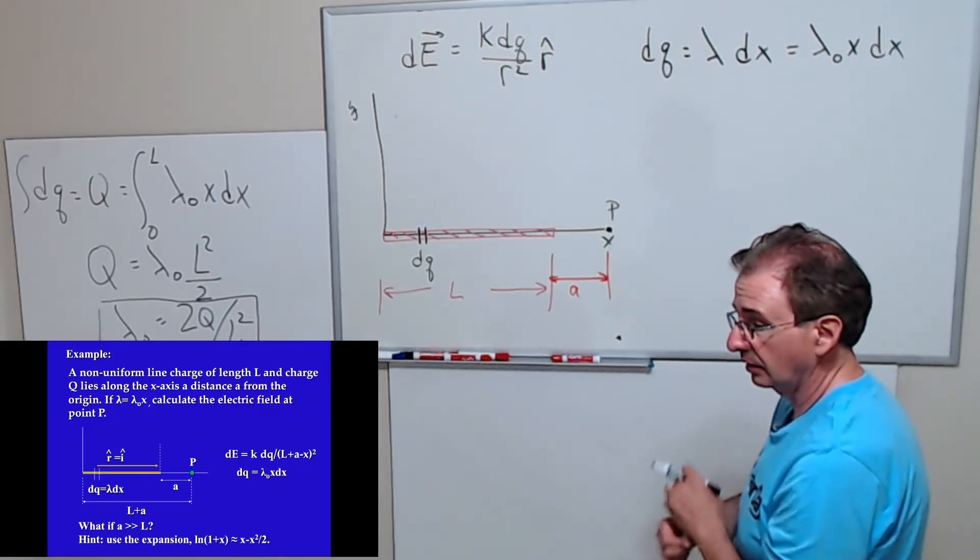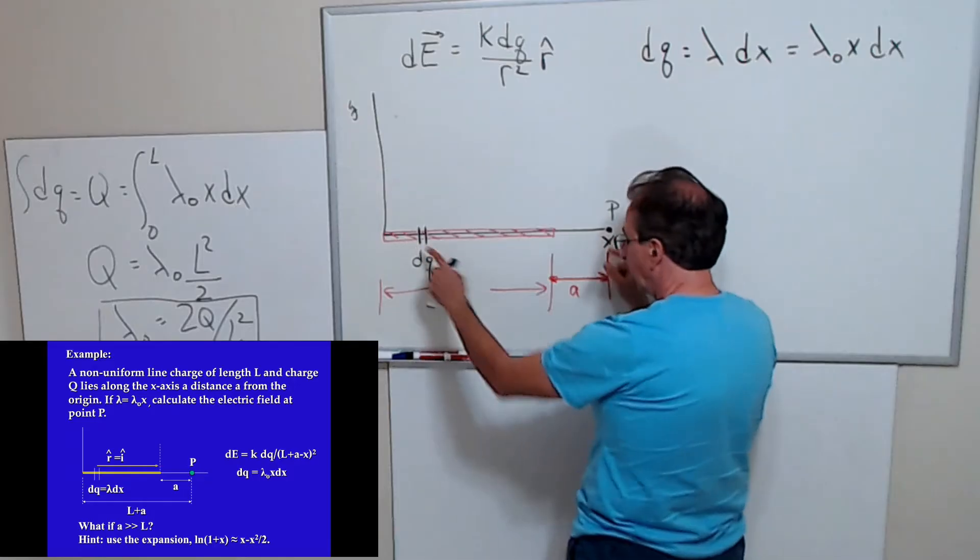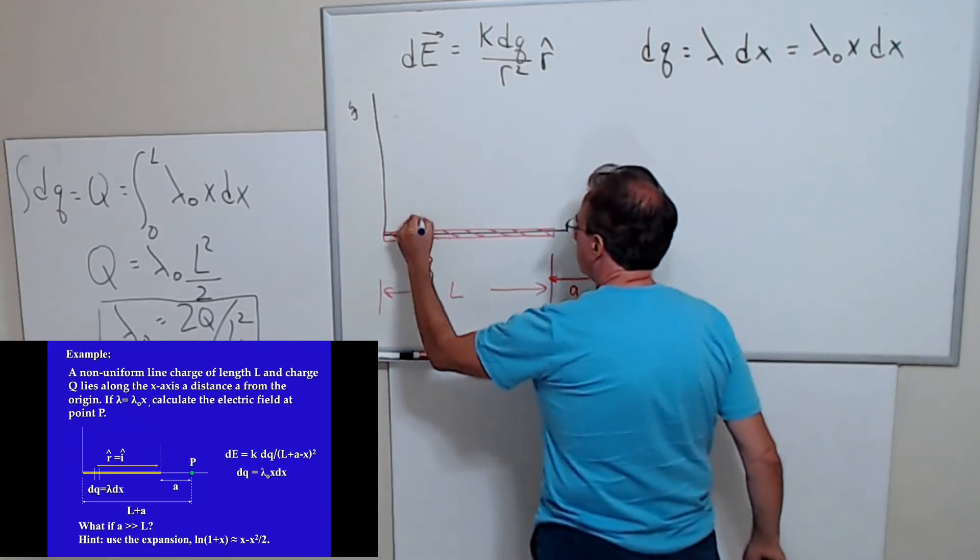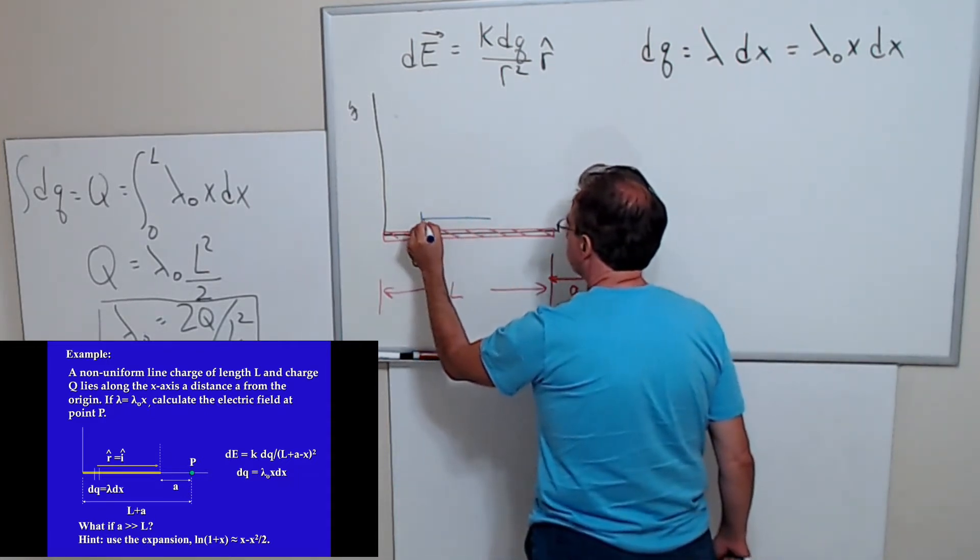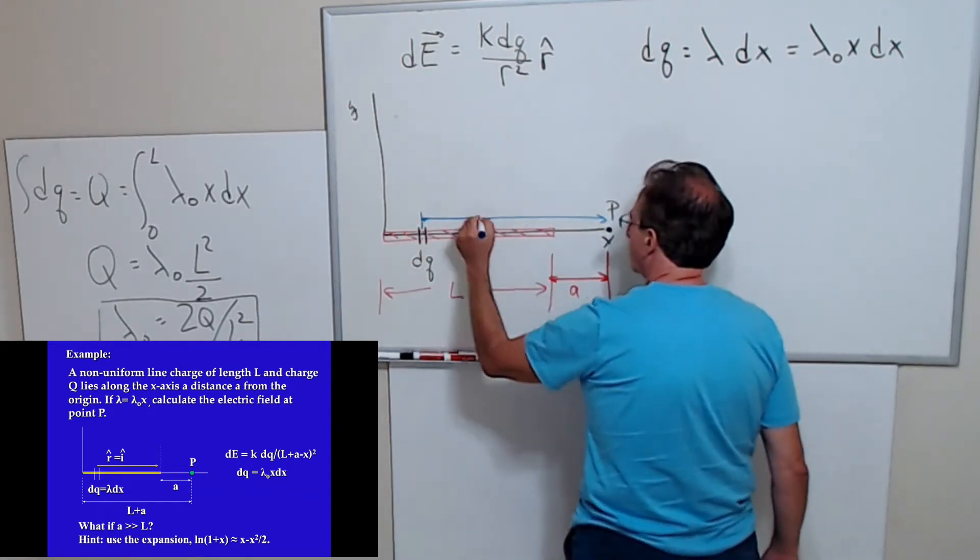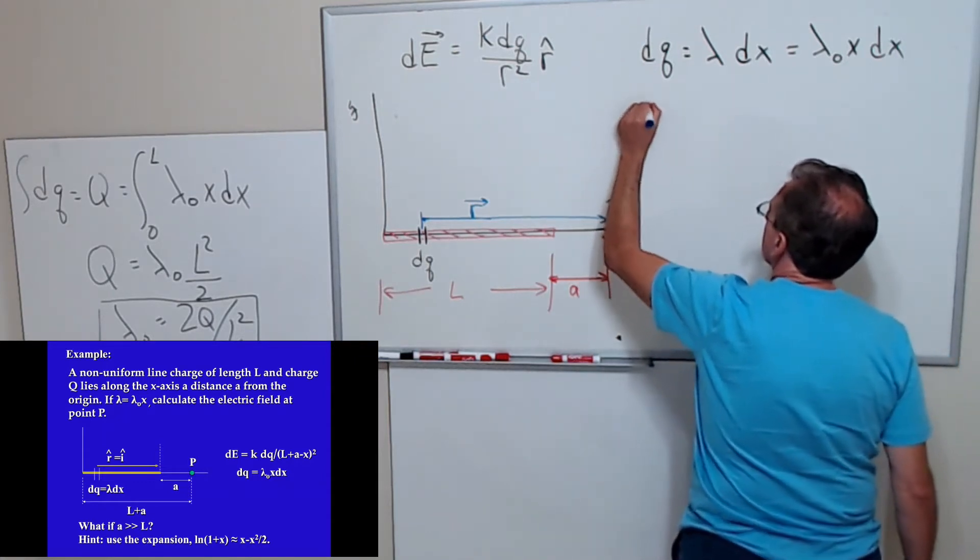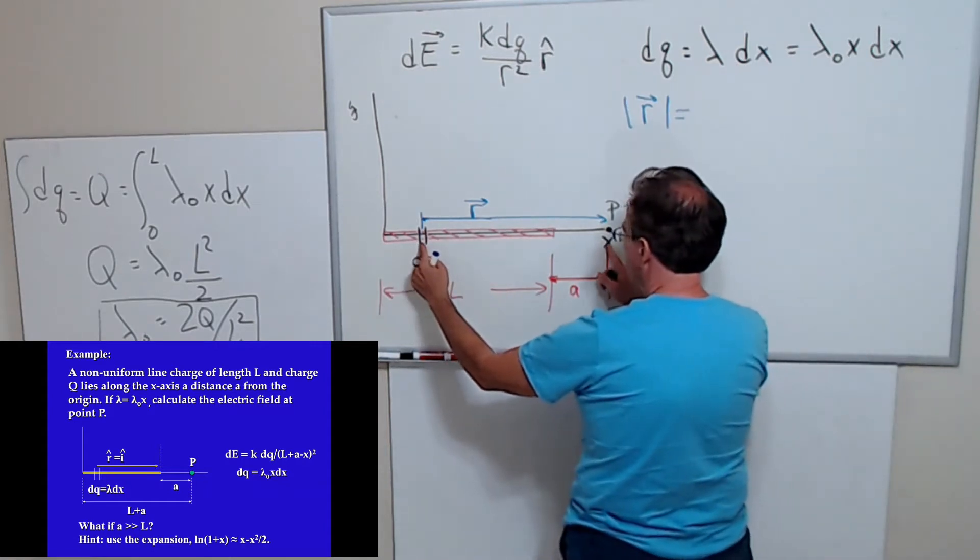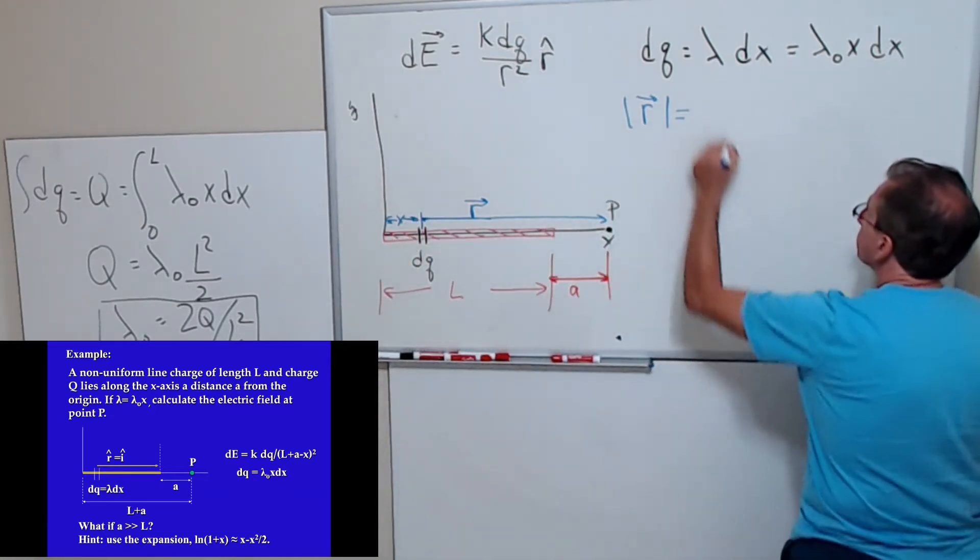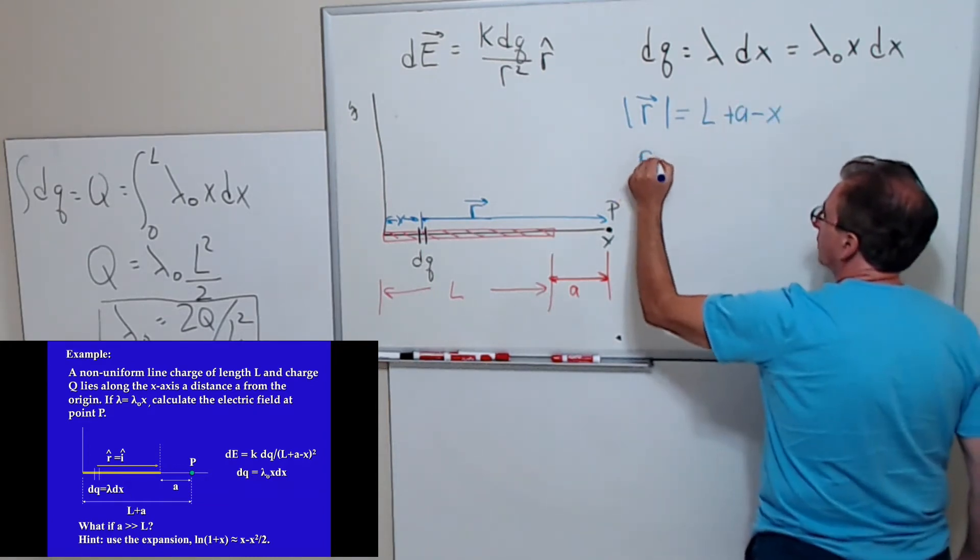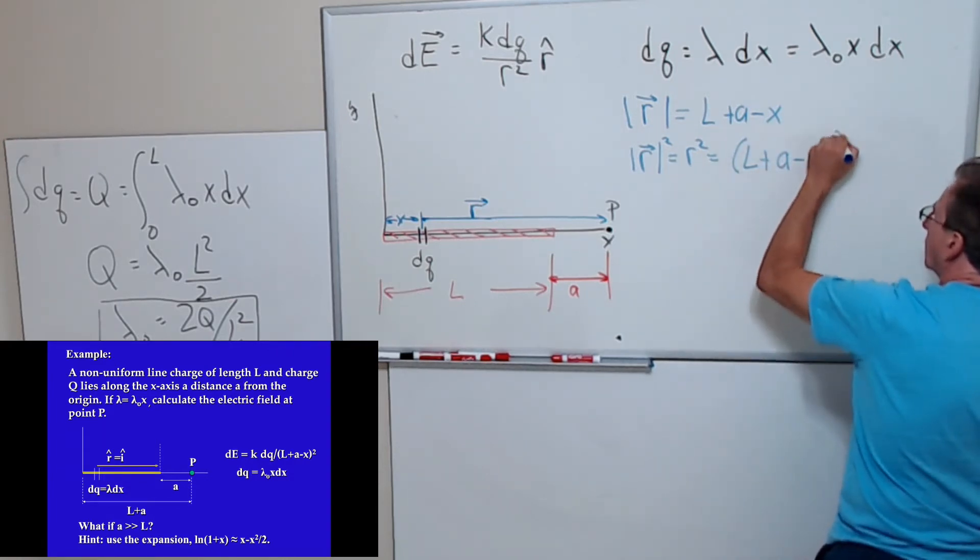Now we've got to find our expression for r squared. r squared is the distance from your dQ to your point P. It's the magnitude of the vector that points from dQ, our source of the field, to the point in which you're calculating the field. So this is the vector r. We want the square of that magnitude. Well, r is going to be this distance which is L plus A minus this distance x. And so r squared is that.